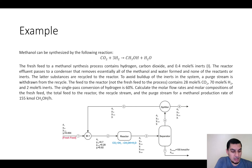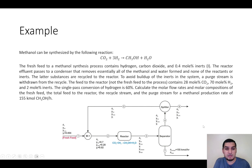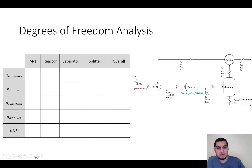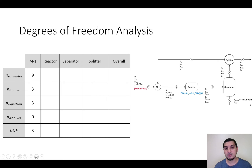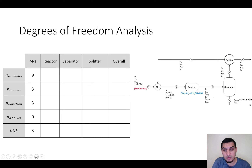To start the degrees of freedom analysis: for the mixer, we have nine variables, three given variables (two compositions and one flow rate), three equations, and no additional relations, giving three degrees of freedom. For the reactor using the extent of reaction method, we have eight component variables plus one extent of reaction — nine variables total — two given variables, five component equations, and one additional relation for conversion, giving one degree of freedom.